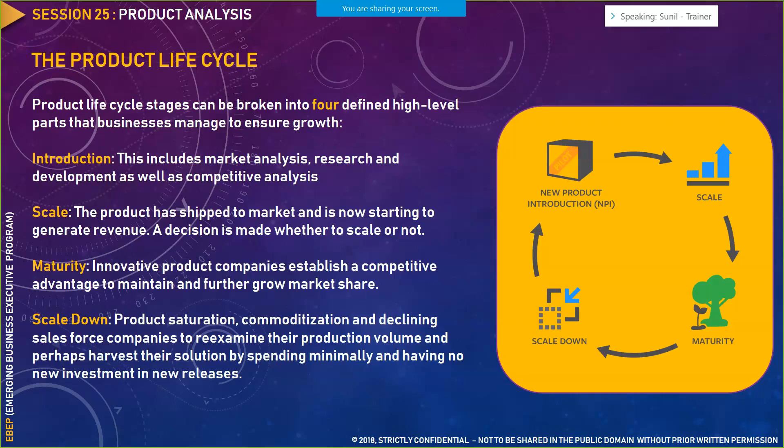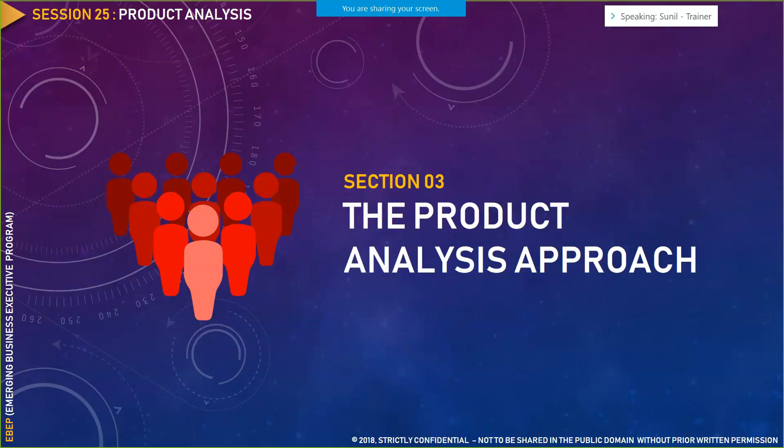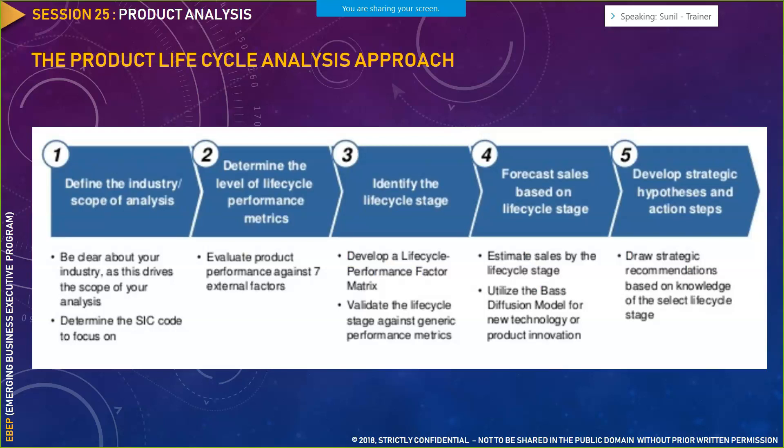The final stage is scale-down. When you feel the product is no longer giving the necessary projected value, you scale down — this is product saturation. The product is no longer profitable and should be retired. These are essentially the four stages in a product life cycle for any software product.